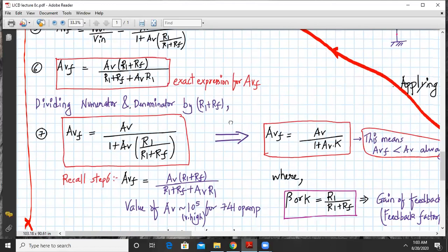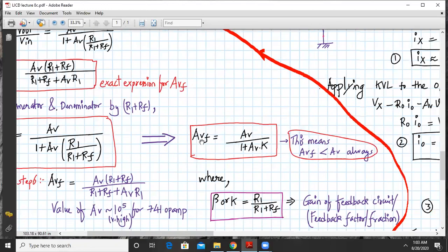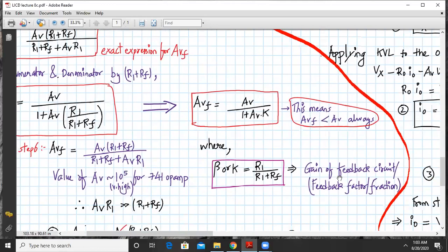Now we will divide the numerator and denominator by R1 plus RF. So we get AVF equals AV divided by 1 plus AV times R1 upon R1 plus RF, which can be written as follows: AVF equals AV upon 1 plus AV into K,